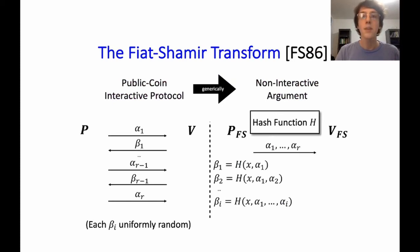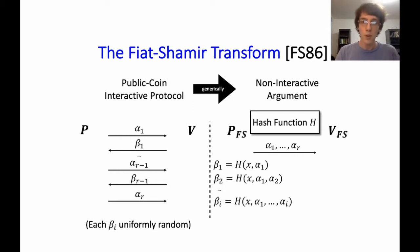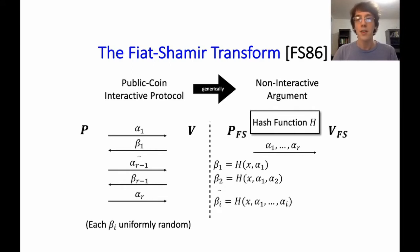The Fiat-Shamir transform is a heuristic mechanism for converting public coin interactive protocols for some task into a non-interactive protocol for the same task. We start with an interactive protocol between a prover and verifier, as on the left, and we assume that every verifier message — all these betas — are uniformly random strings. Fiat-Shamir converts this into a non-interactive protocol.